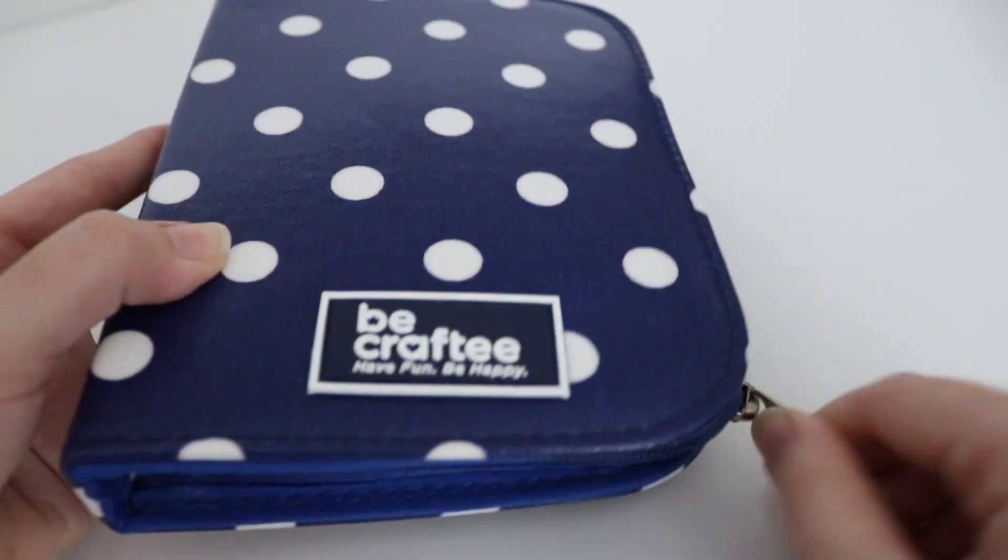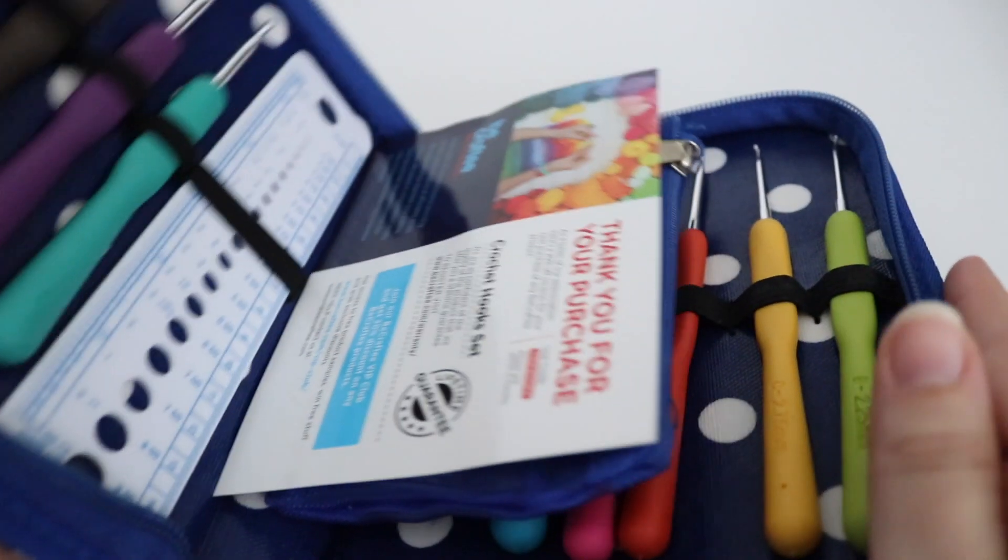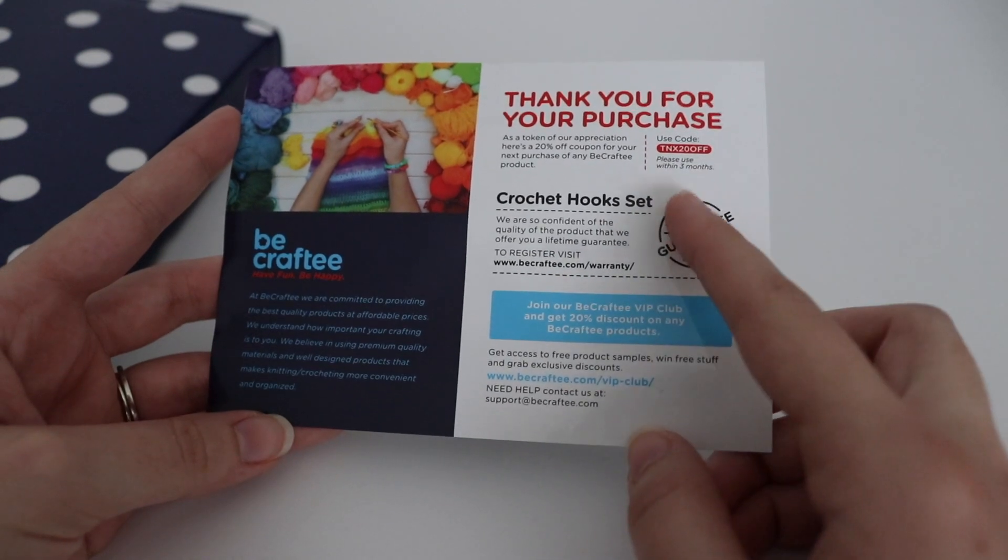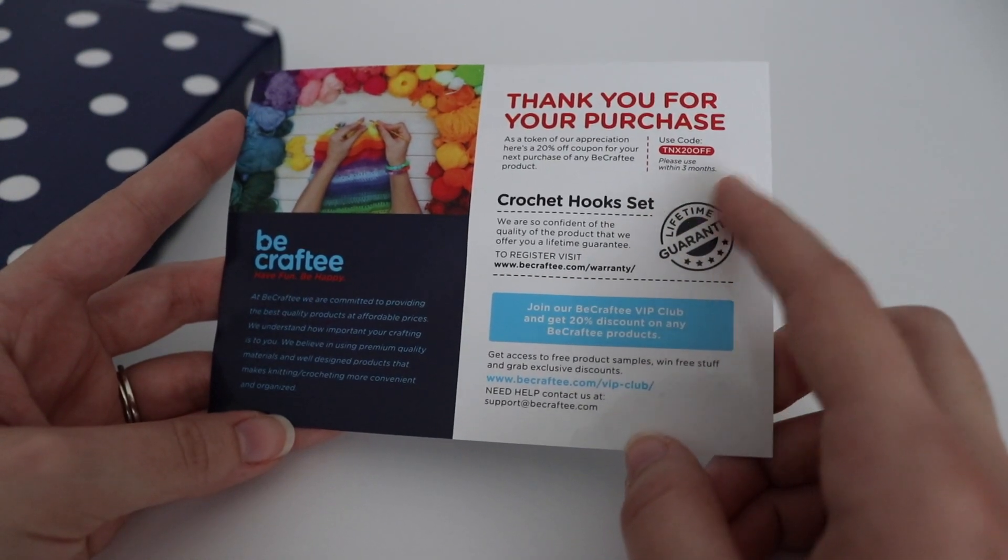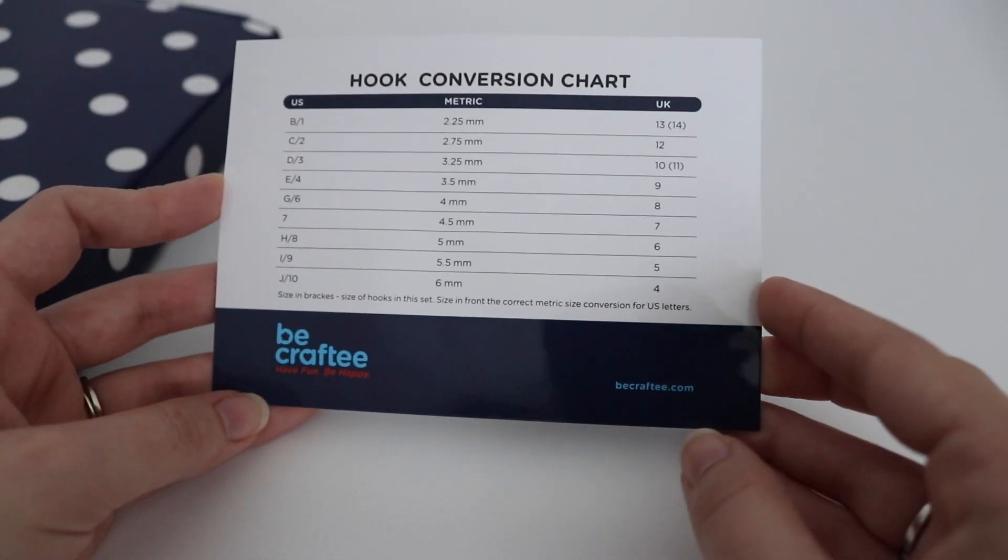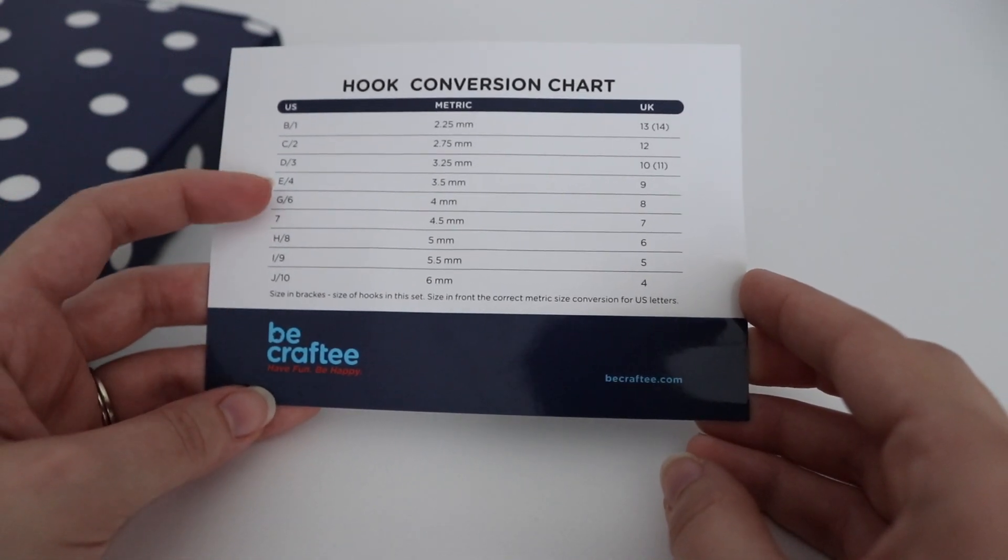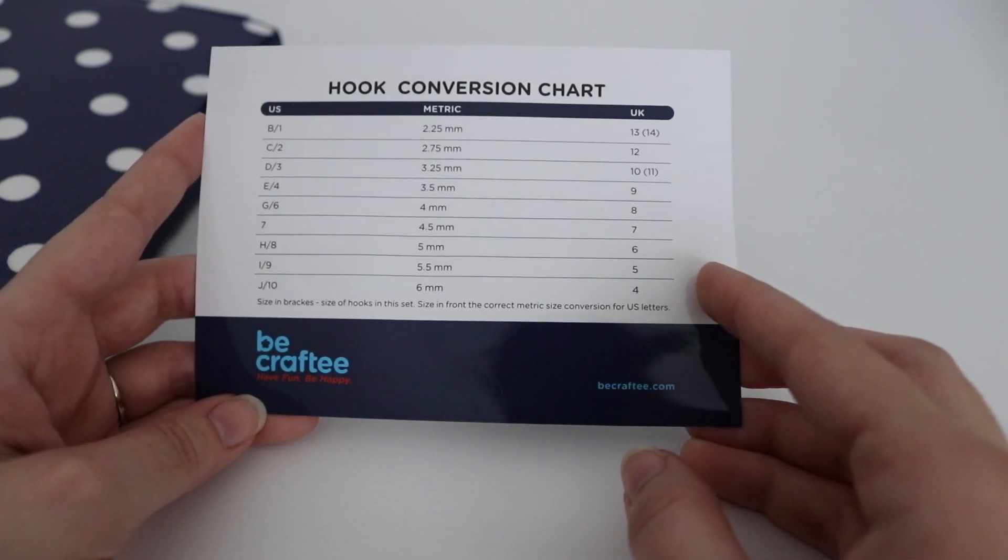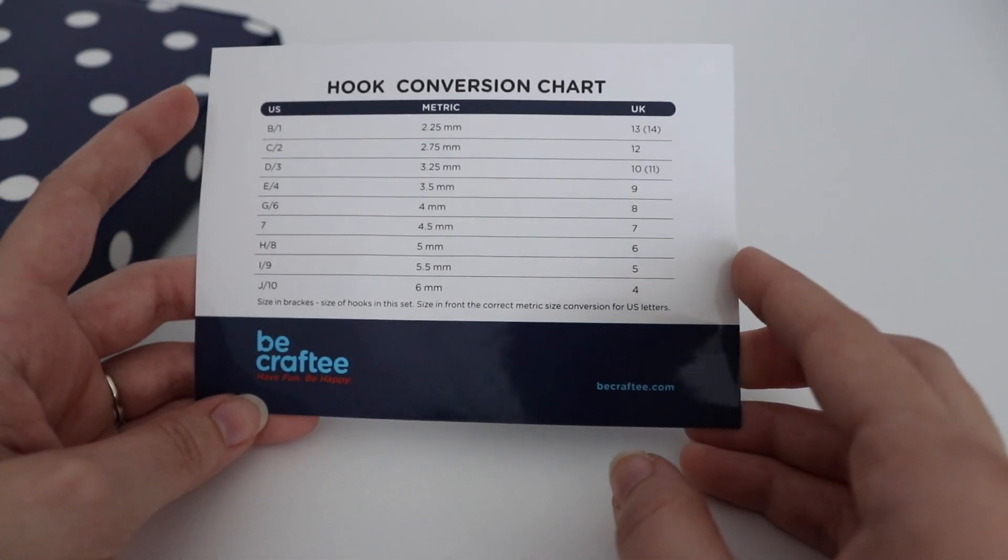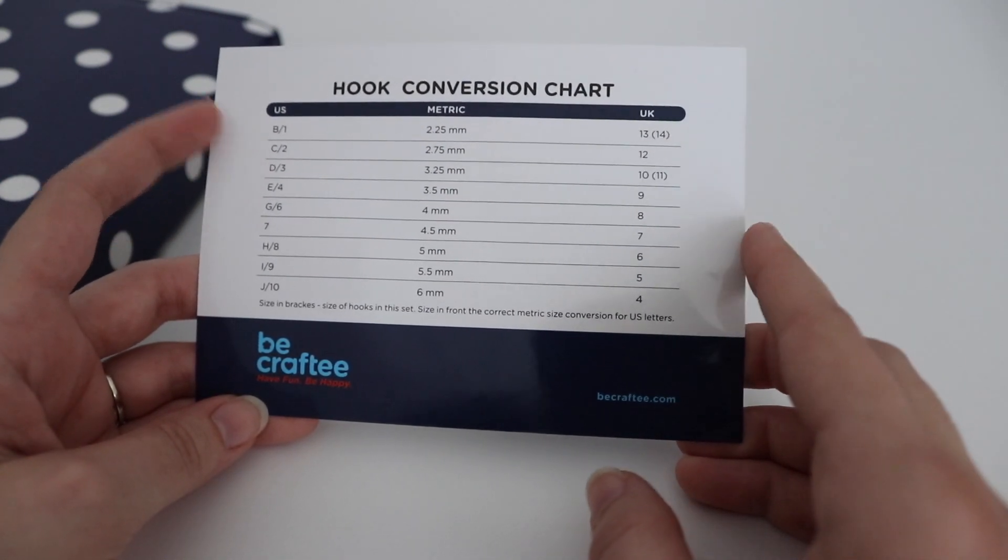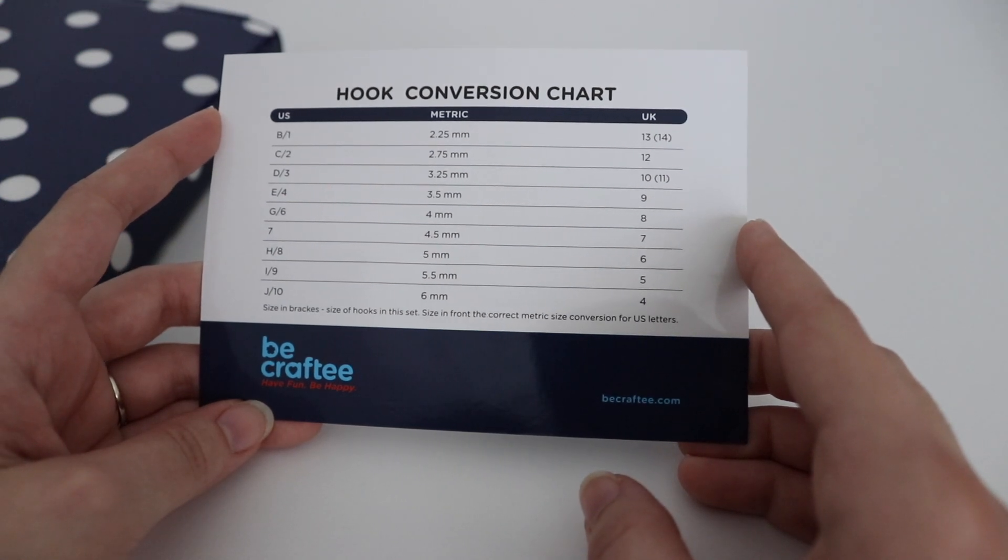So then if we go ahead and open up this, you see all the goodies inside. So right away you see this little information sheet and get a 20% off coupon for your next purchase on any BeCrafty product. And on the back side, they have this crochet hook conversion chart, which is always helpful in understanding the different US terms, metric terms, as well as the UK terms. Because I know a lot of people interchange between US terms and UK terms. So it's always nice to understand what exactly those hook conversions mean.